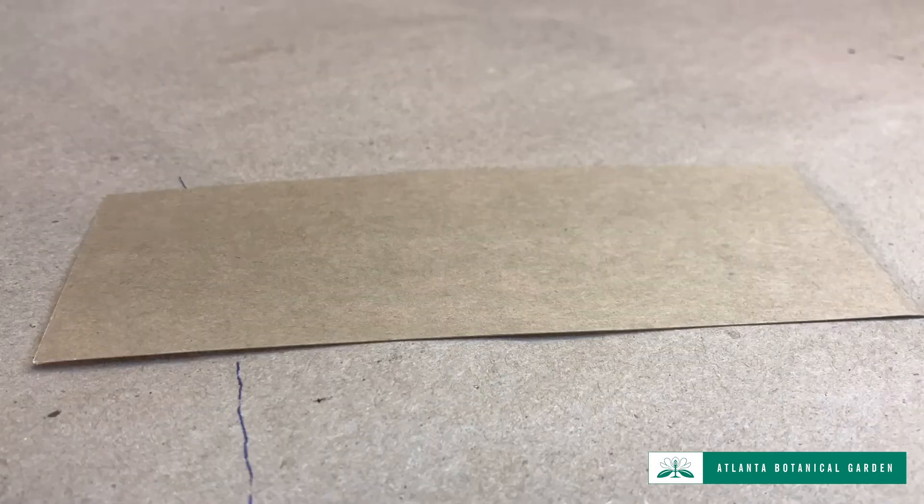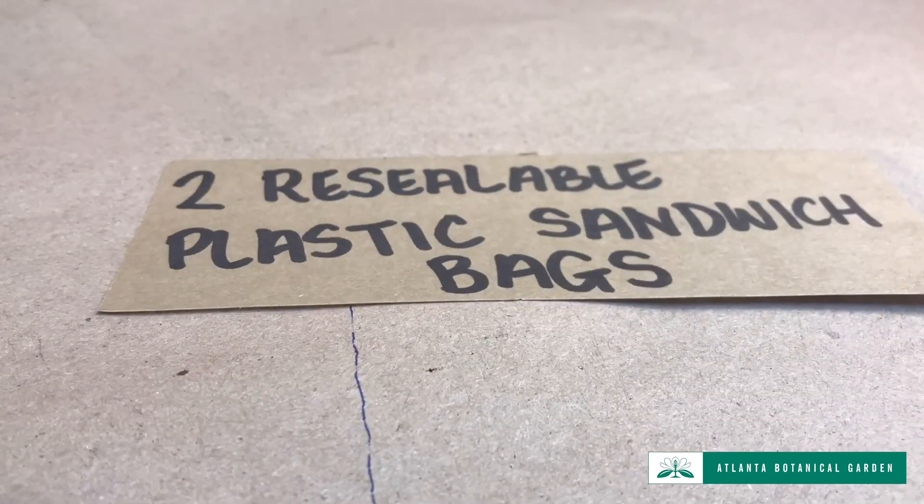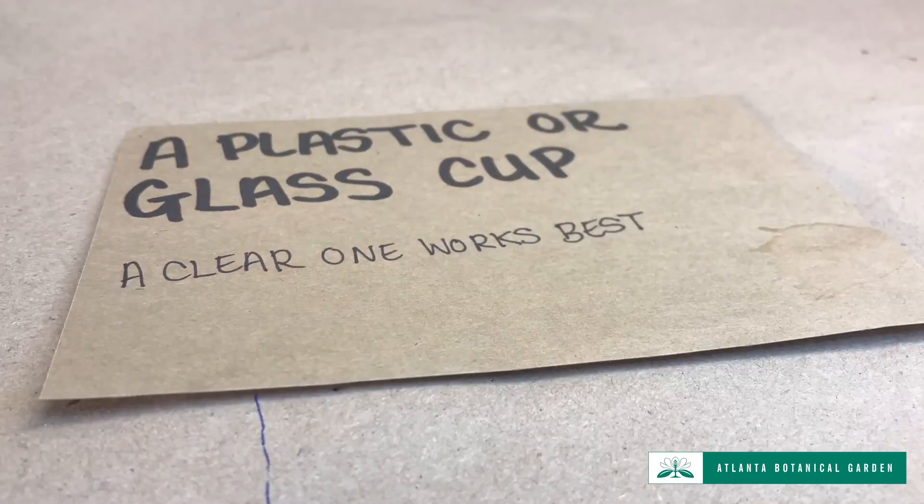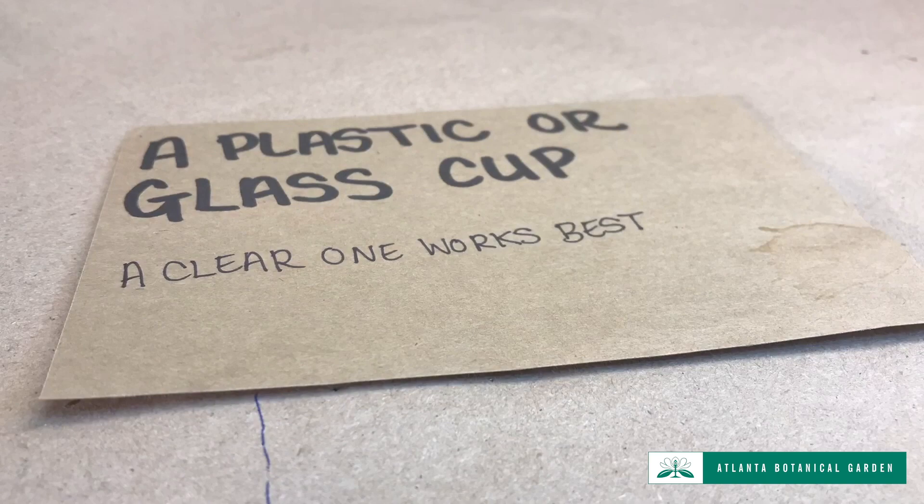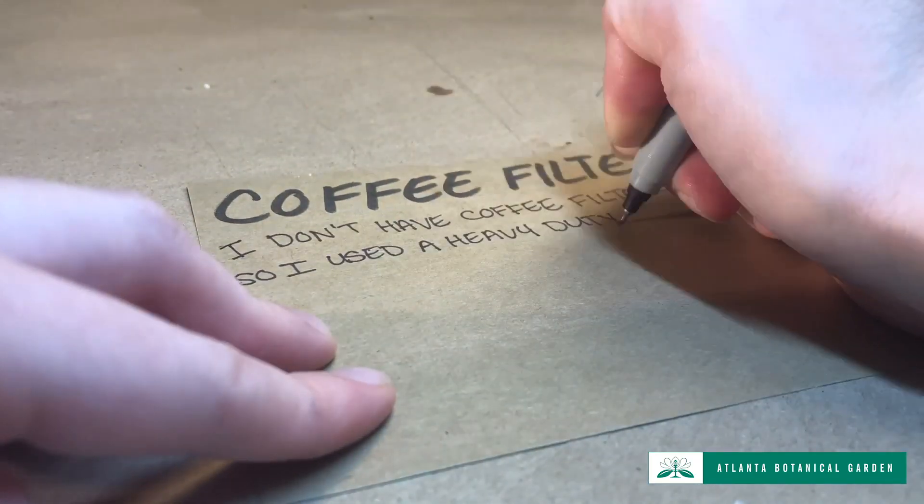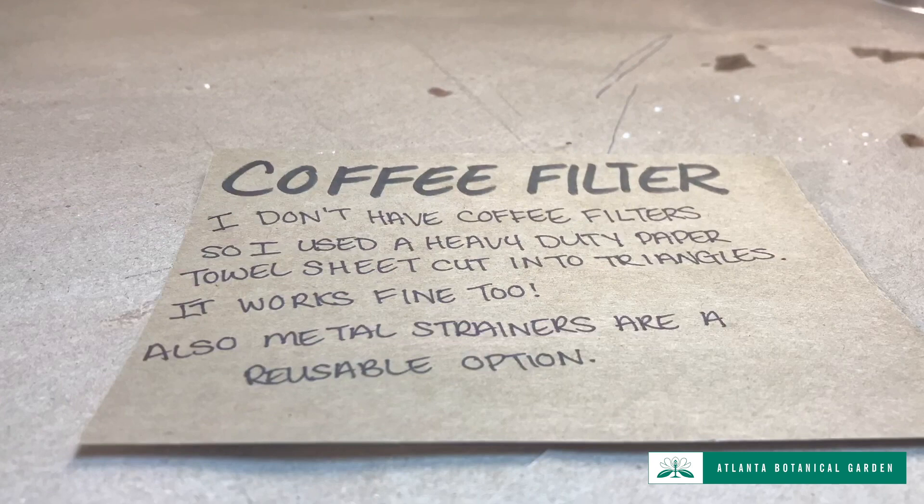You will need a butter knife, two resealable plastic sandwich bags, a plastic or glass cup. A clear one works best to see the DNA form. Coffee filter. Now, I don't have a coffee filter, so I used a heavy-duty paper towel sheet cut into triangles. If you have a metal strainer, that works as well.